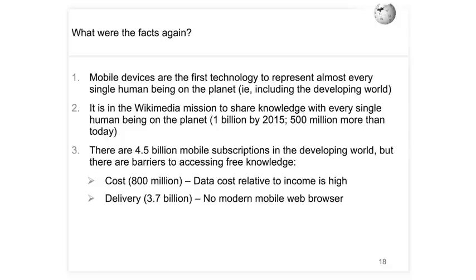Let's review the key facts. Mobile devices are the first technology to represent almost every single human being on the planet. We are Wikimedia — we want to share knowledge with every single human being. We said one billion by 2015, meaning we need to reach 500 million more over three years. There are 4.5 billion mobile subscriptions in the developing world, but barriers exist: up to 800 million people have a cost barrier, and up to 3.7 billion have a delivery barrier. So what are we doing about it?